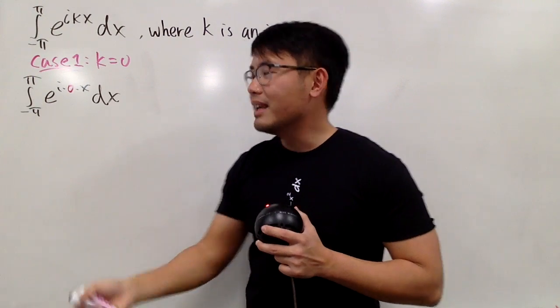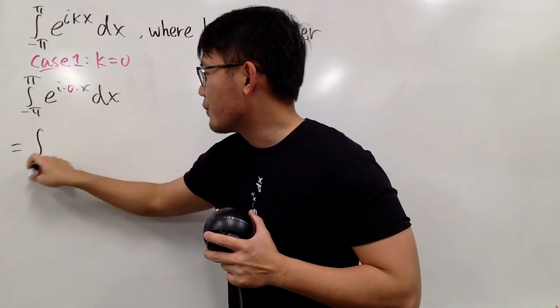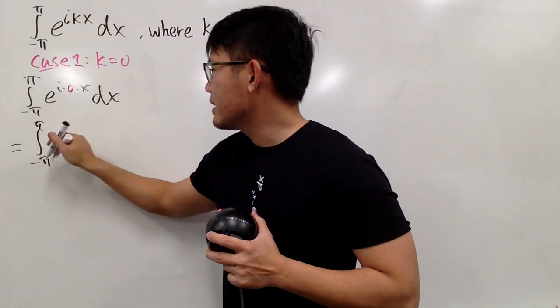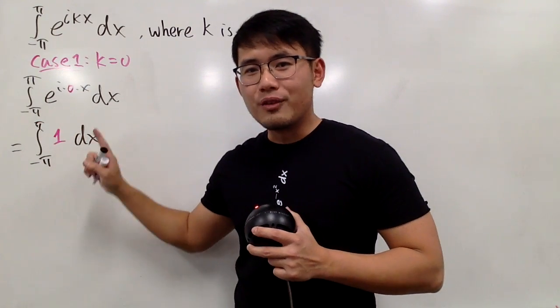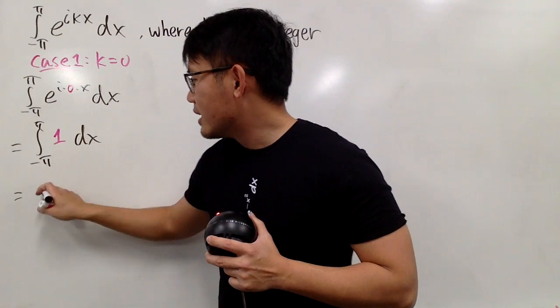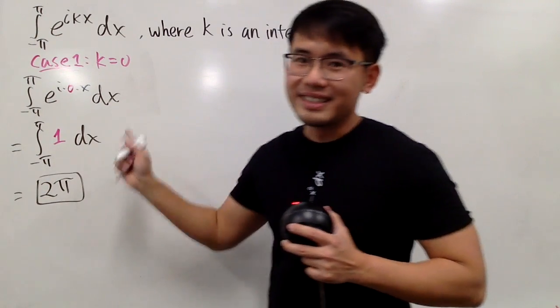And e to the 0 is just 1. So we are just integrating from negative pi to pi, and inside here is just 1. And when you integrate 1 from negative pi to pi, altogether you will end up with 2 pi, and that's it.